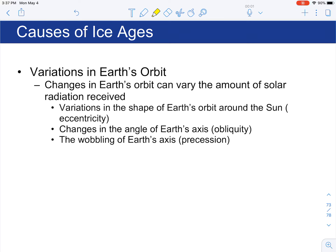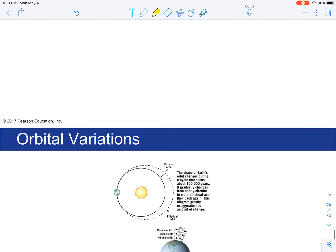The Milankovitch cycle involves variations in the Earth's orbit that are predictable and affected by three variables. First, the Earth orbits in an ellipse, so there are times when the Earth is a little further from the sun and times when it's a little closer. Second, there are changes in the angle of the Earth's axis, which affects the amount and intensity of light received. Third, there's the wobbling effect of the Earth's axis called precession. When these factors coincide, there are periods where the Earth receives less energy in the form of sunlight.